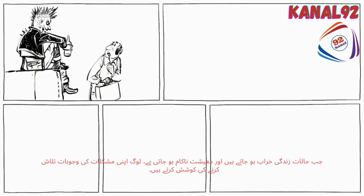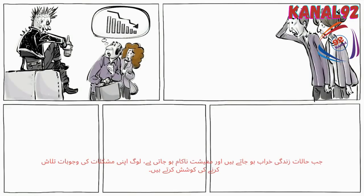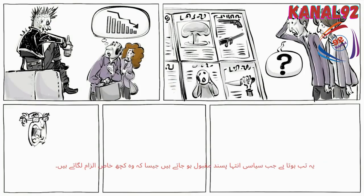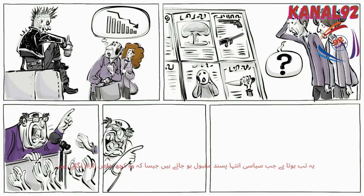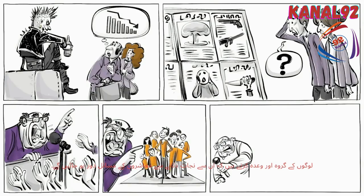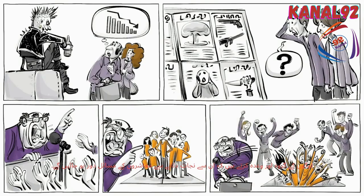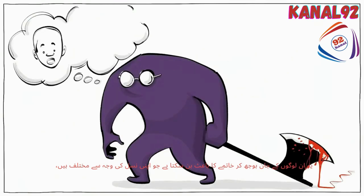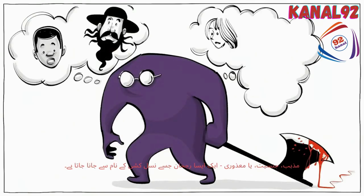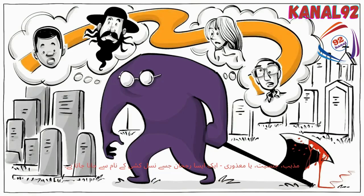When living conditions worsen and the economy fails, people try to find reasons for their troubles. This is when political extremists can become popular as they blame certain groups of people and promise that by getting rid of them, society's problems will go away. This can lead to the deliberate elimination of those who are different because of their race, religion, sexuality, or disability — a phenomenon known as genocide.